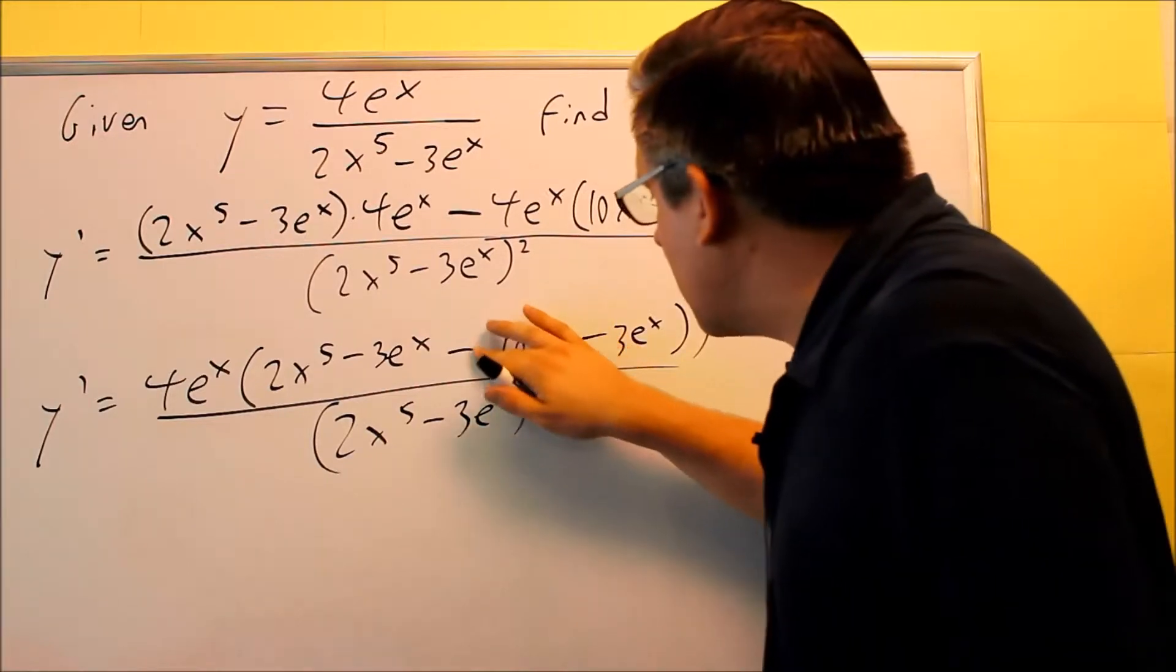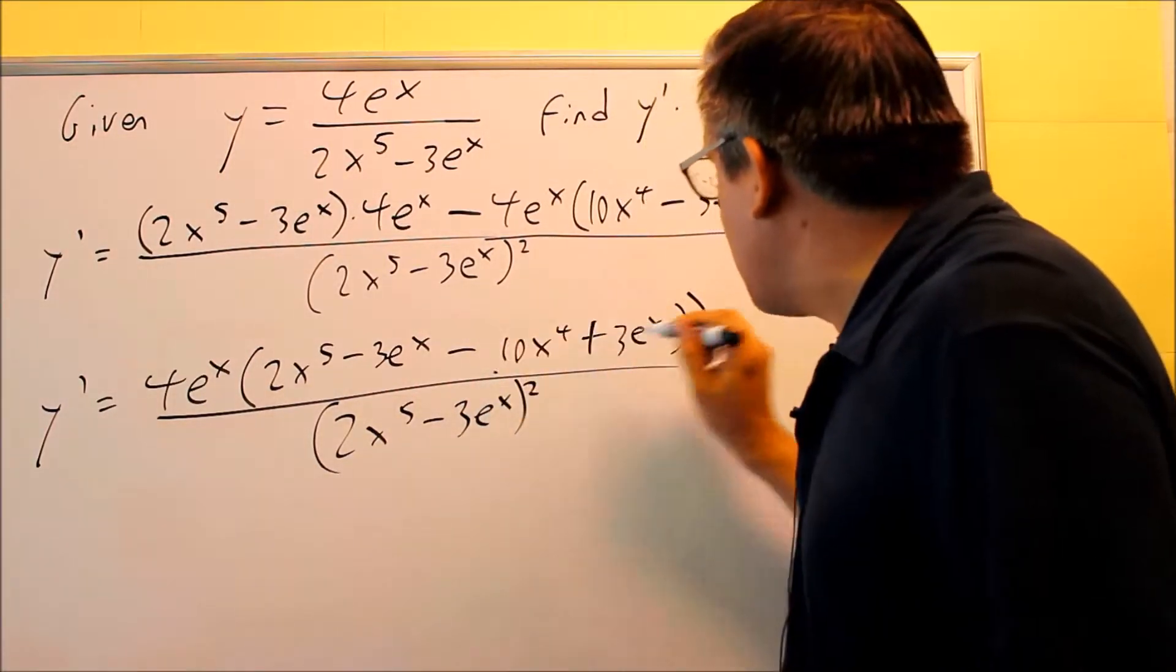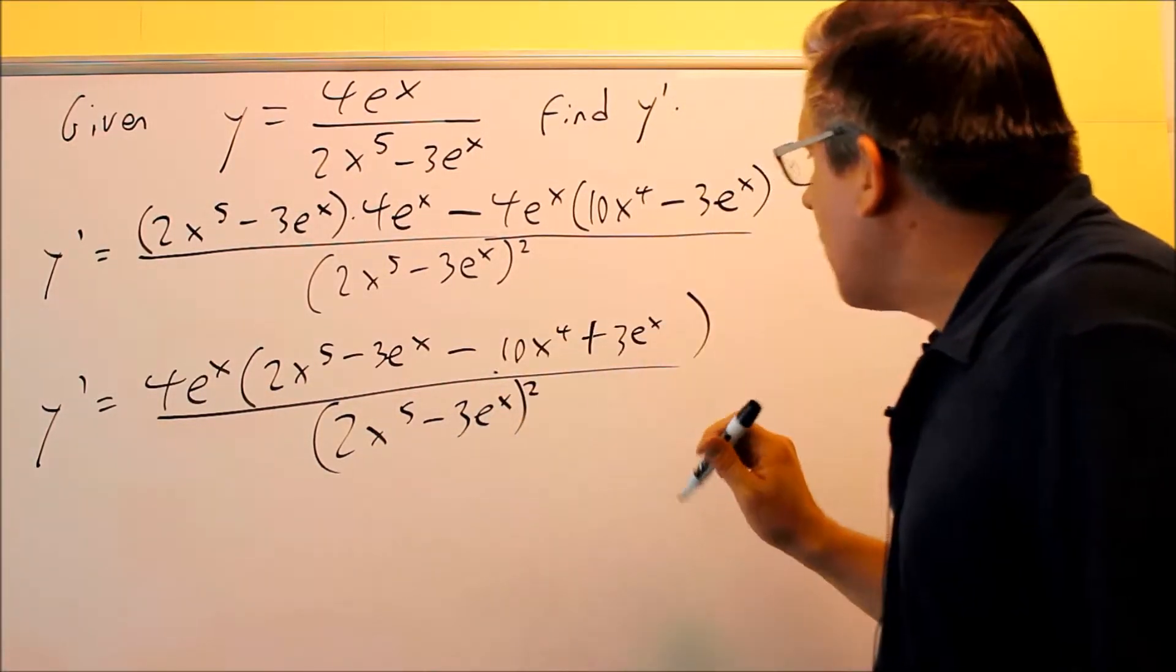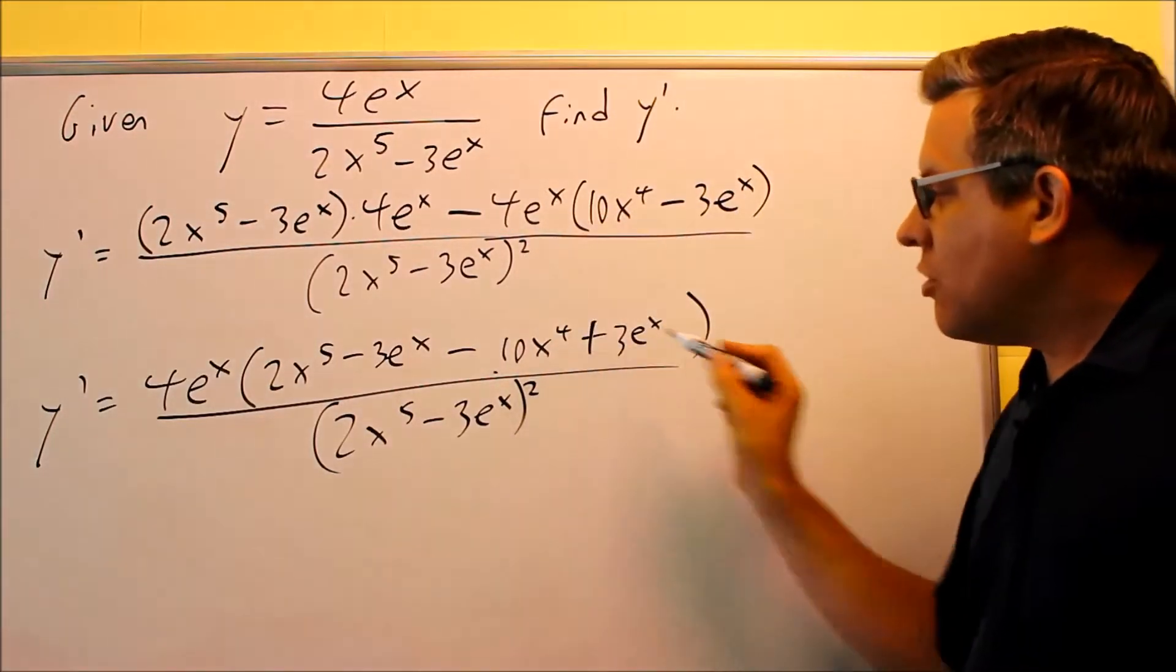So I'm just going to remove the parentheses. This will be a plus, because again, you're distributing the negative to each thing on the inside, and you get this.